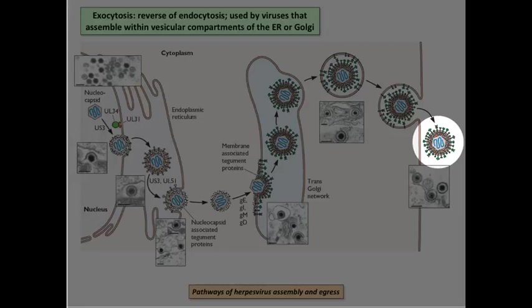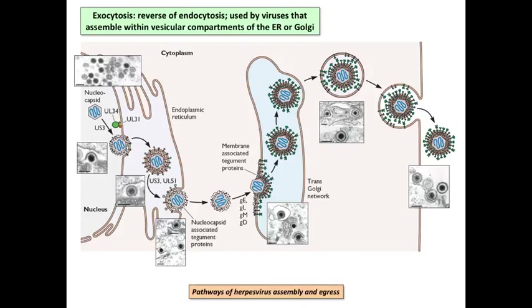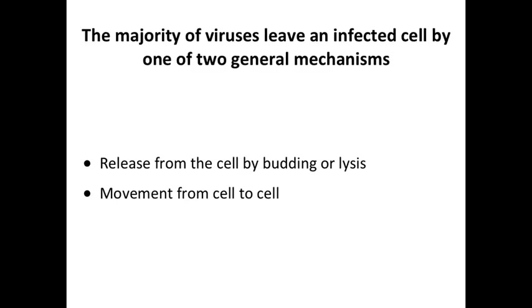Finally, that second membrane fuses at the plasma membrane to release the virion, which ends up with the right number of membranes — one. That one membrane was derived from the Golgi because that's where it was acquired; the other was just an extra one to get to the cell surface. It's kind of an extreme version.